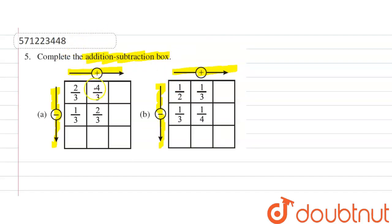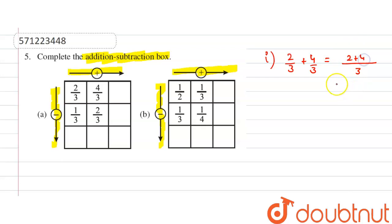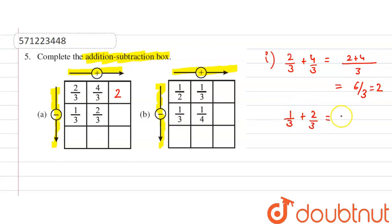So let's start. In the first group, 2/3 plus 4/3: the LCM is 3, and 2 plus 4 equals 6, so 6/3 equals 2. Now add 1/3 plus 2/3: taking LCM as 3, 1 plus 2 is 3, so 3/3 equals 1.